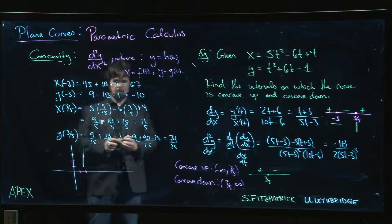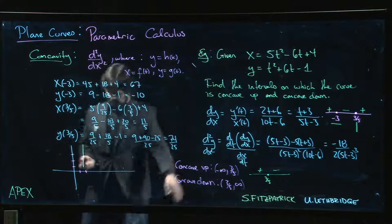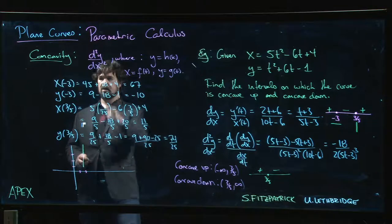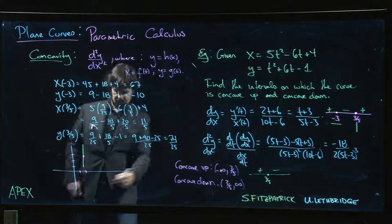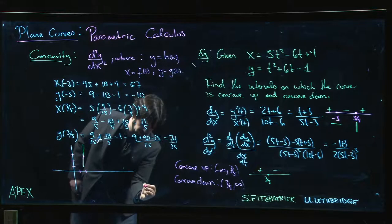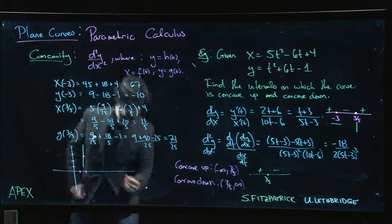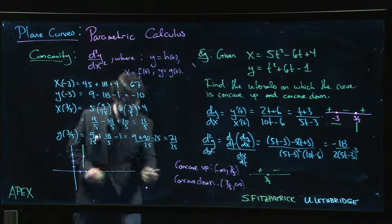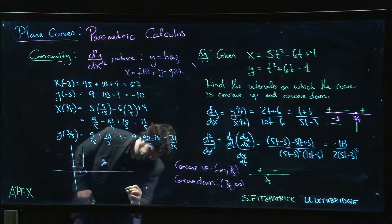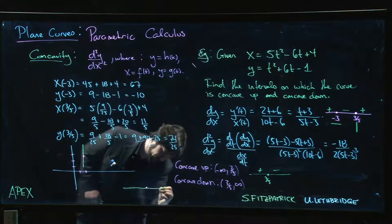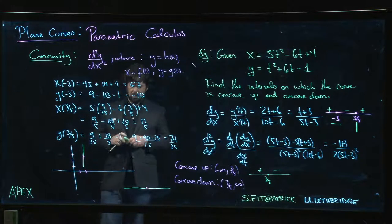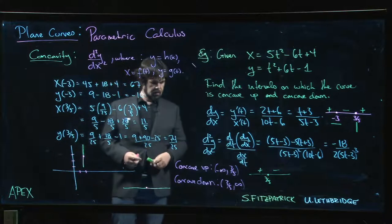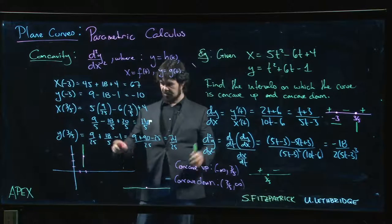Now way, way, way out, t = -3 corresponds to this point (67, -10). You know, let's just say it's kind of out here somewhere. Somewhere out there, there's a horizontal tangent.